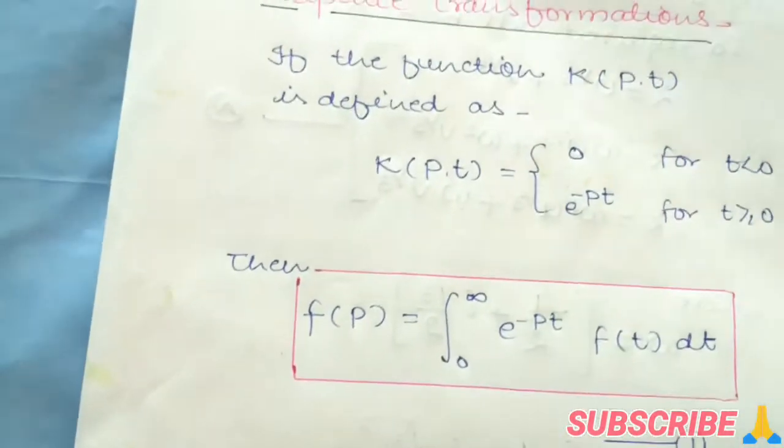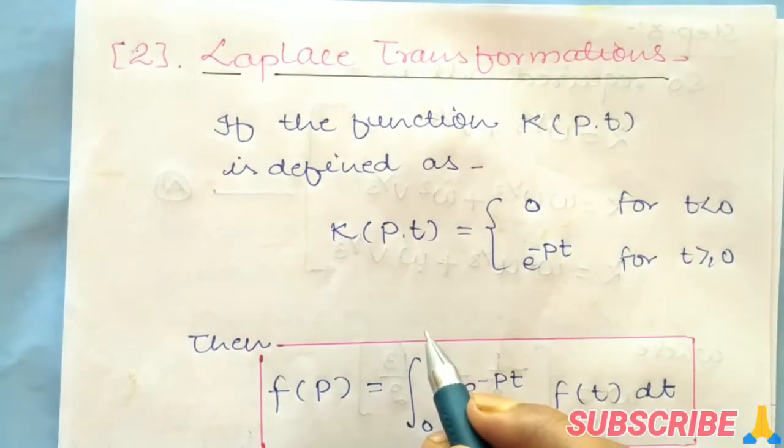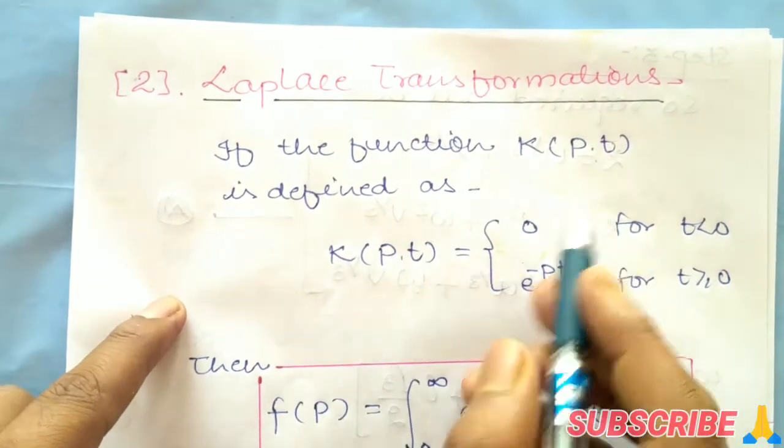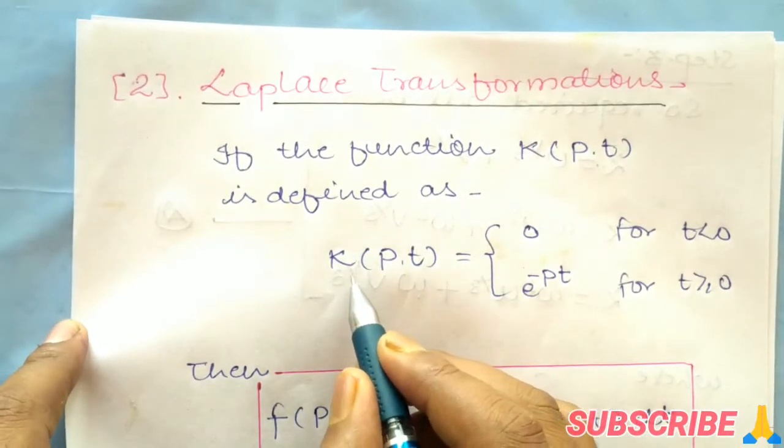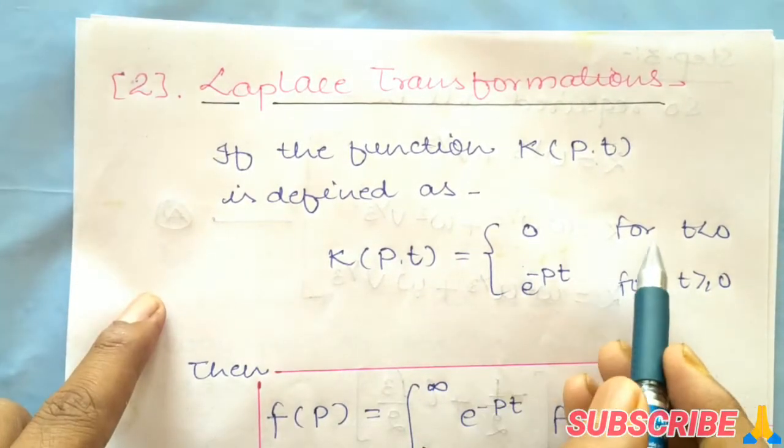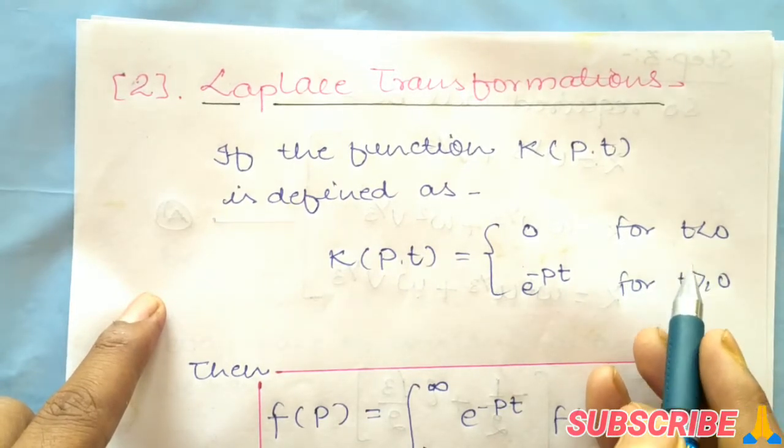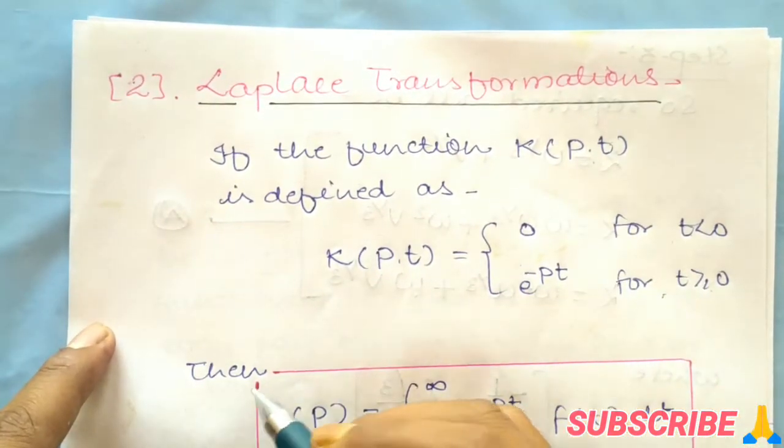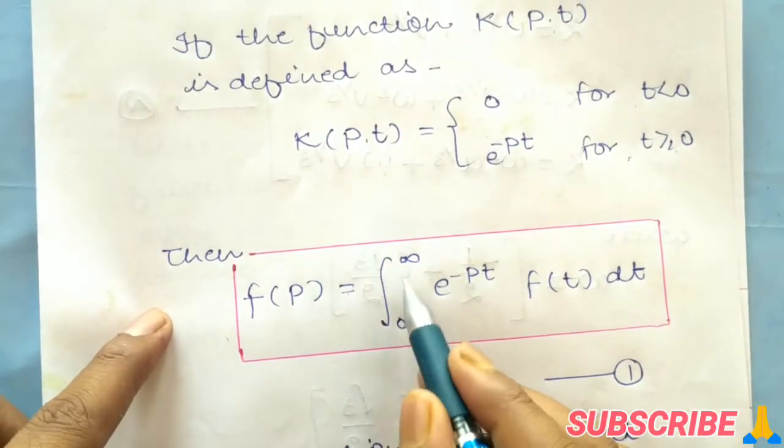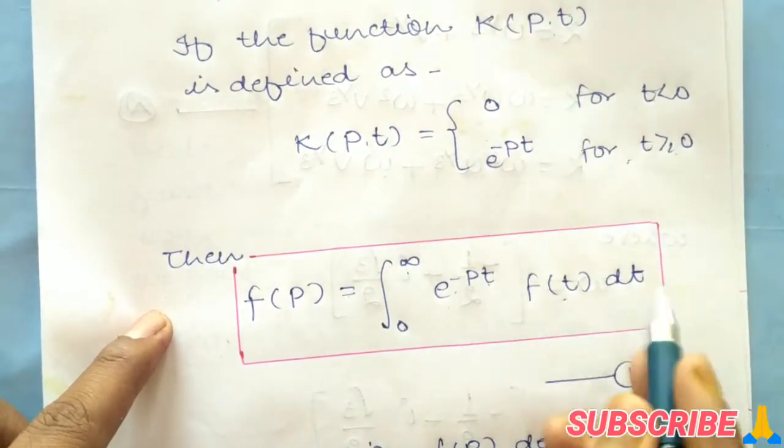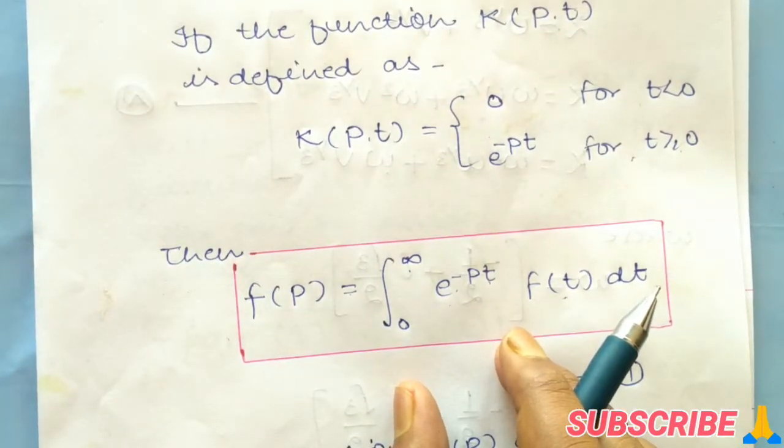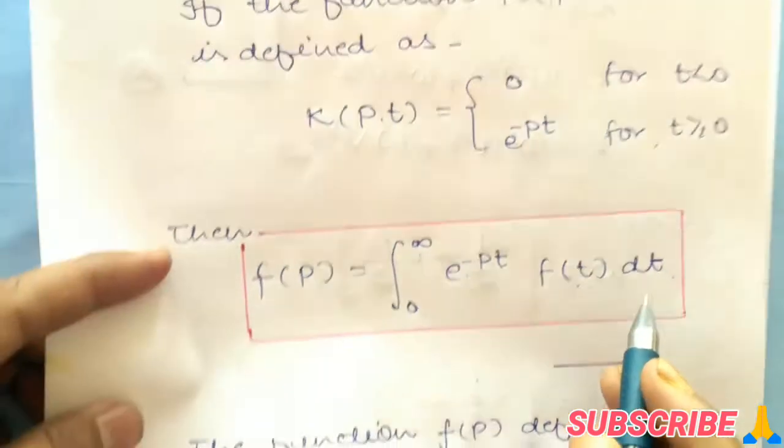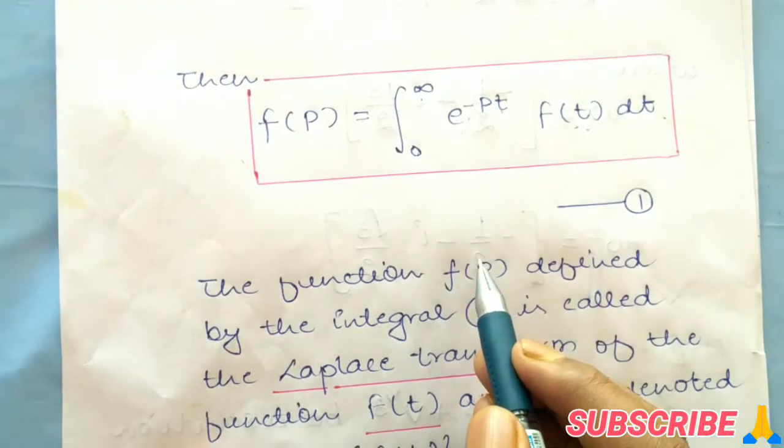Now let's talk about Laplace transformation. If the kernel K(p,t) is defined as K(p,t) = 0 when t < 0, and e^(-pt) when t ≥ 0, then your function becomes F(p) = integral from 0 to infinity of e^(-pt)f(t)dt. This is called Laplace transformation or Laplace transform.